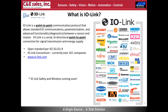IO-Link is not a network — it's a point-to-point communication link. In addition to signal transmission, we also transfer energy or power supply for the sensor or actuator. IO-Link conforms to the standard IEC 61131-9, and the IO-Link consortium manages the development and maintenance of the protocol. Currently, over 161 companies are part of the consortium. For more information, visit IO-Link.com.